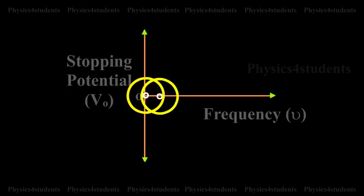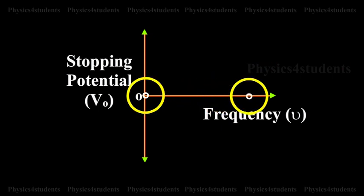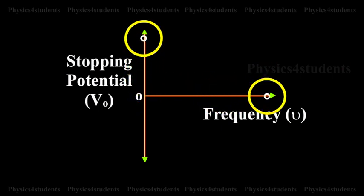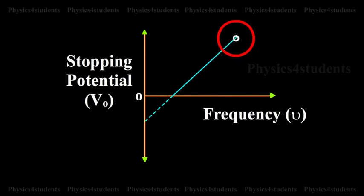If the frequency of the incident radiation is plotted against the corresponding stopping potential, a straight line is obtained as shown in the animation.